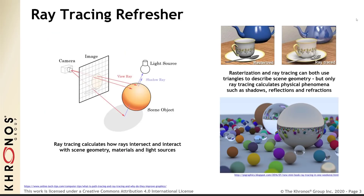We've got a bit of a ray tracing refresher here. This goes through the technicality of how ray tracing works. Basically, ray tracing is really all about tracking the bouncing of light between the camera, objects in your scene, and light sources. You can see a difference between rasterization and ray tracing.